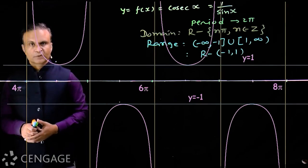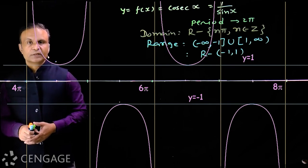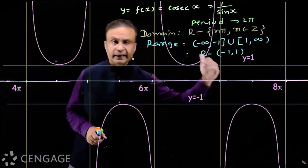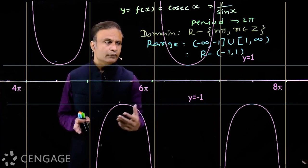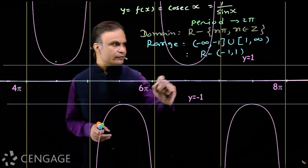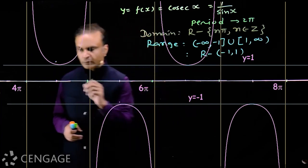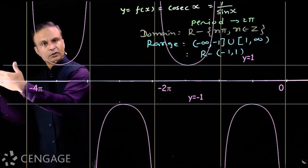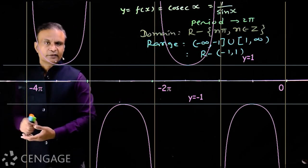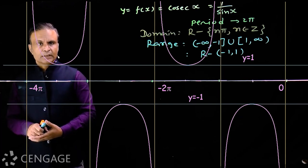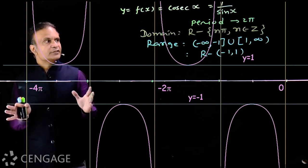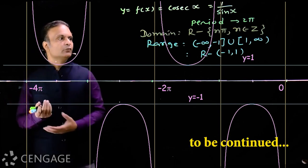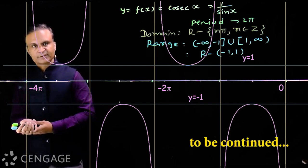Similarly, we have the graph of the function in the intervals 4π to 6π, 6π to 8π, and so on. On the left side, we have the graph in −2π to 0, then −4π to −2π, and so on for negative values. The period is 2π and we can easily get this graph from the graph of sine x.